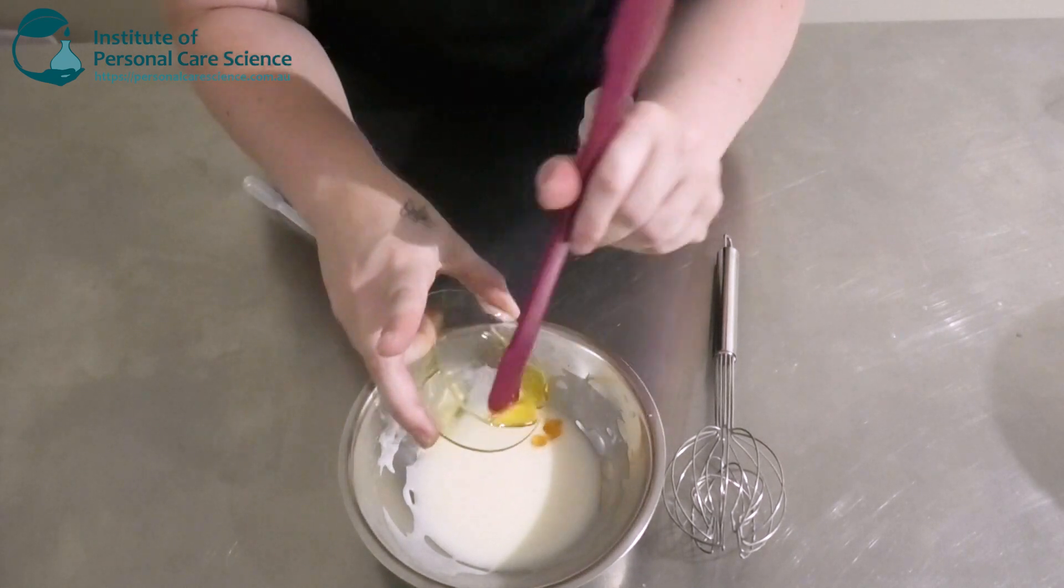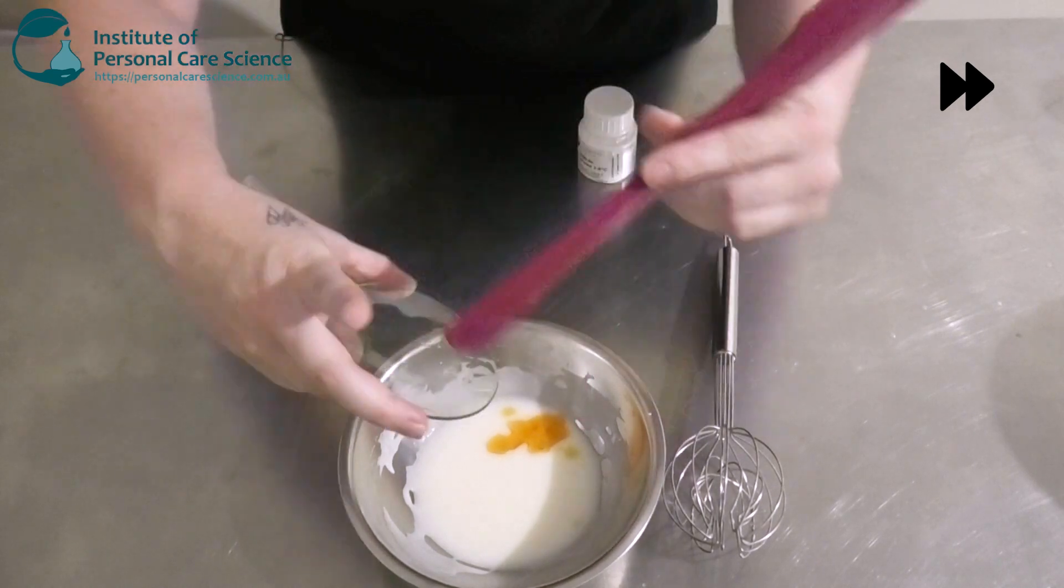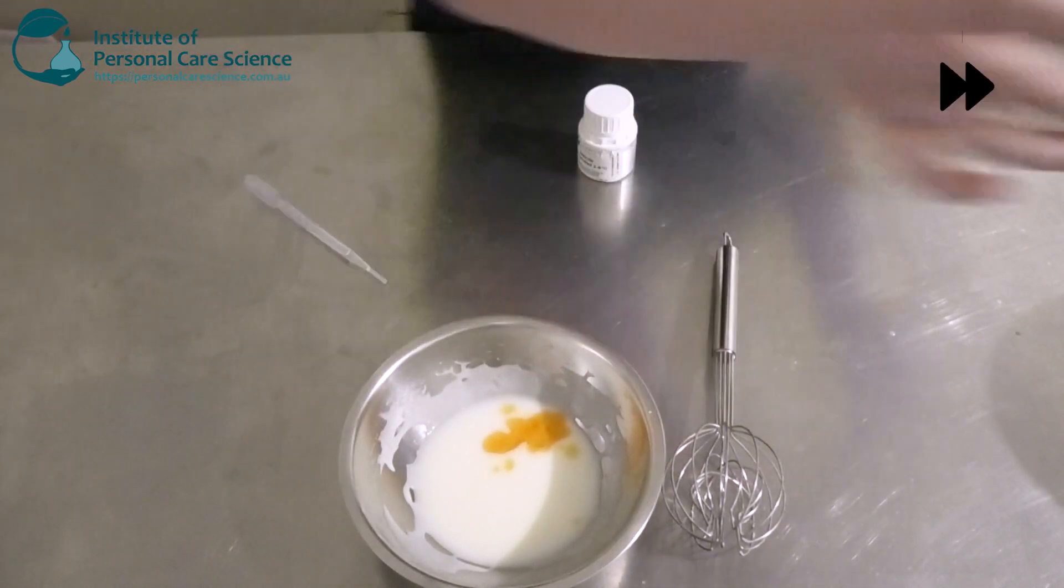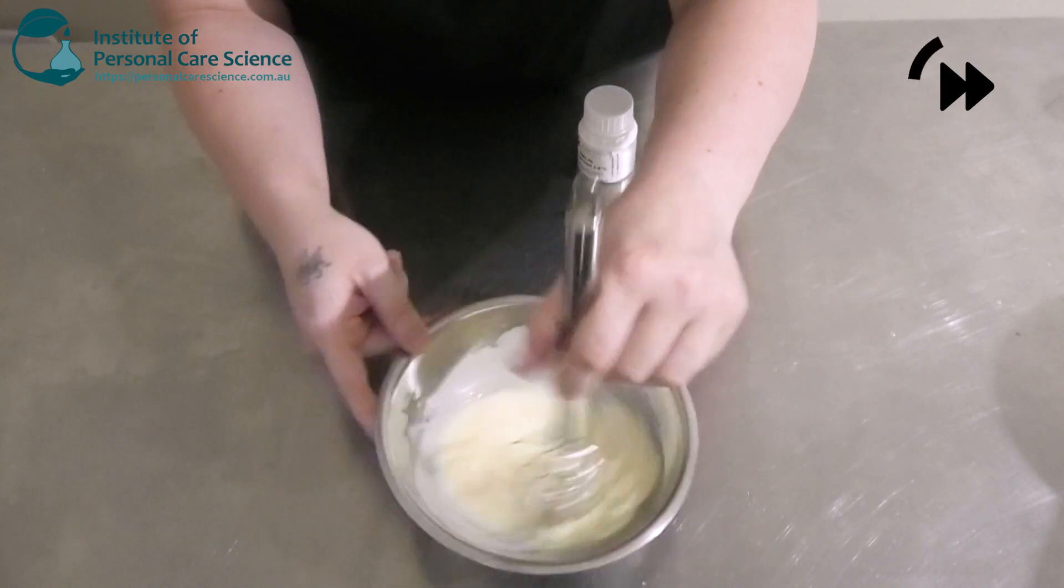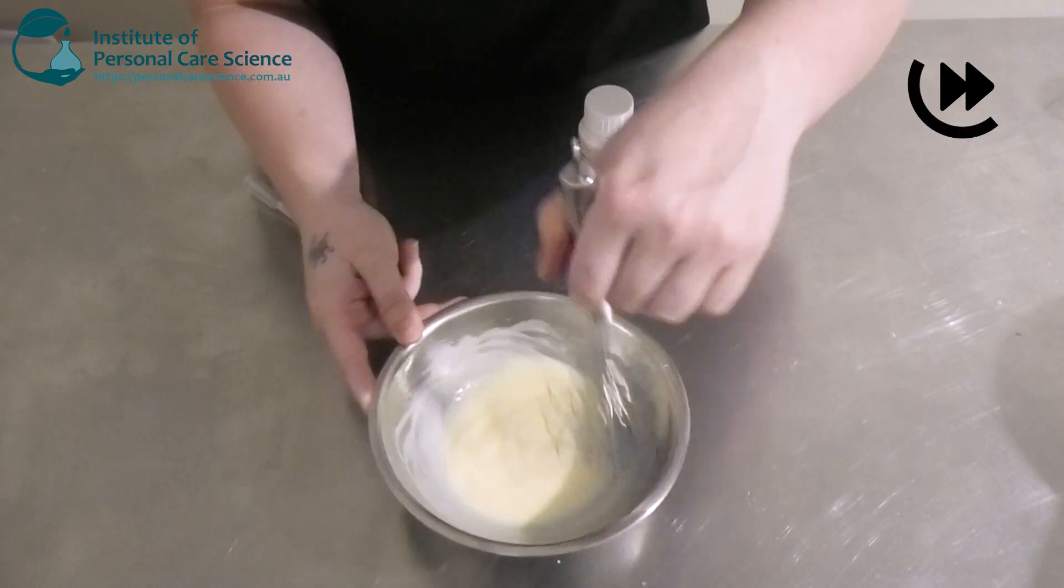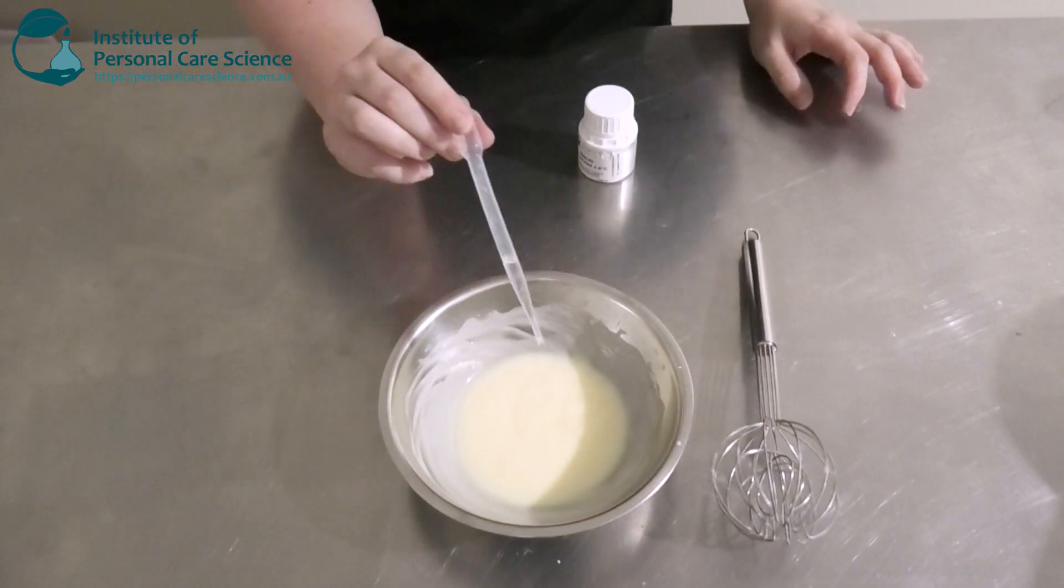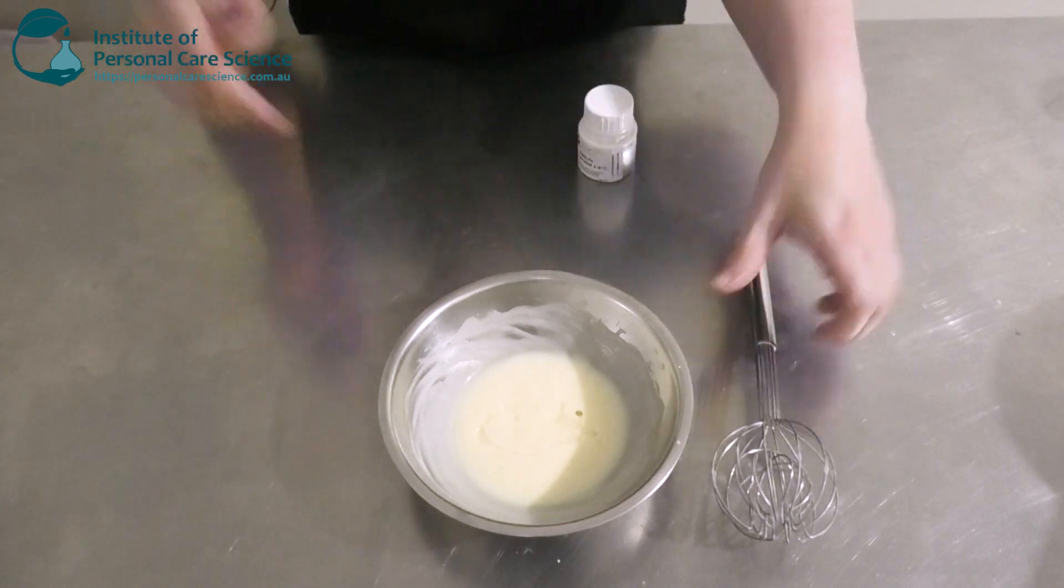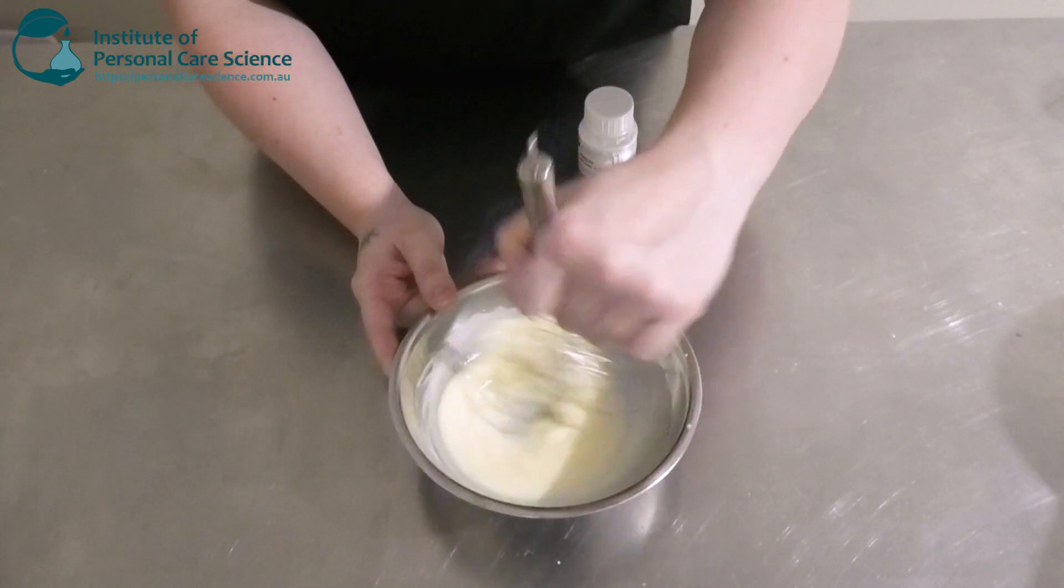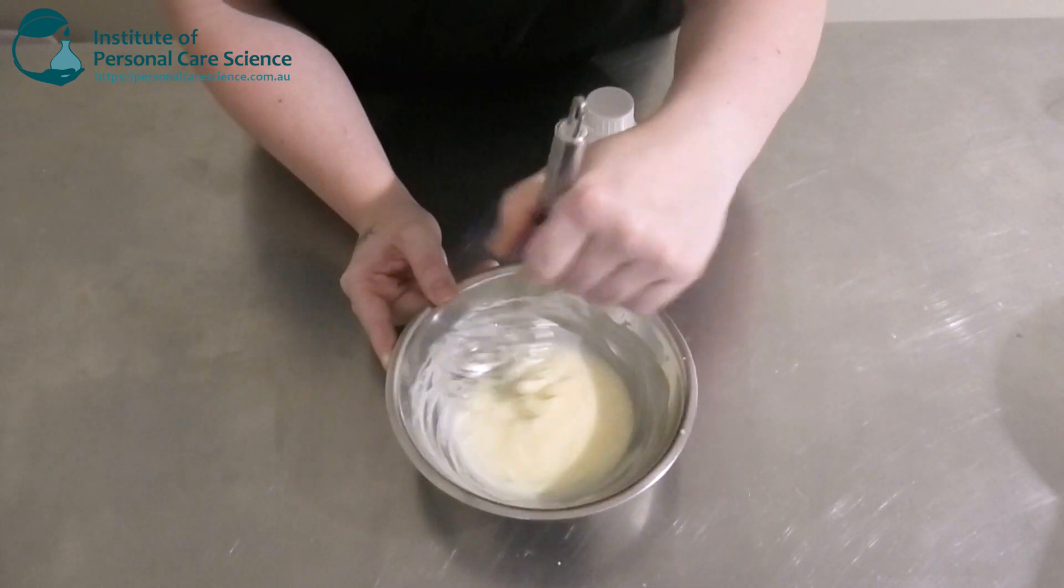Okay, once that's added in, just add it into your serum there. And lastly, I'm just going to add in my preservative. So I'm using Geogard ECT here. This is a naturally derived or nature-identical preservative, so it's okay to use in organic formulas.